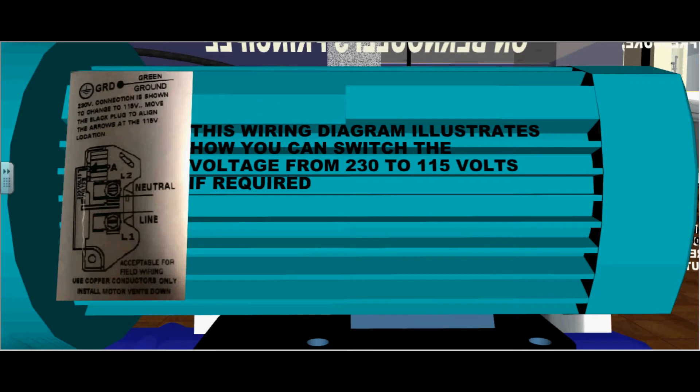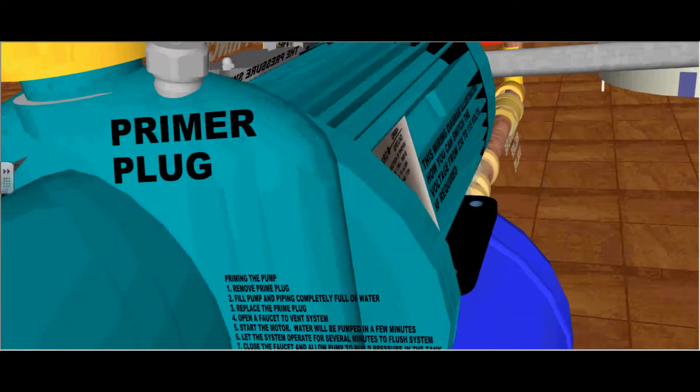This wiring diagram illustrates how you can switch the voltage from 230 to 115 volts if required. It is usually stamped right on the motor of the pump.